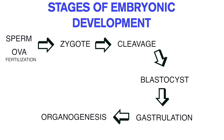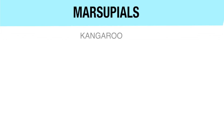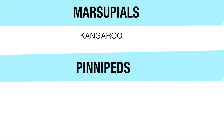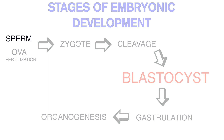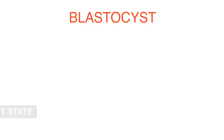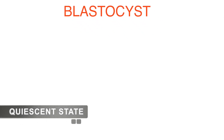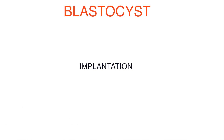This delayed implantation is a process seen in marsupials like kangaroos, and also in pinnipeds, commonly known as seals. In these mammals, every developmental stage is the same, but the exception is only the pause — the timing in stages. It's at the blastocyst stage where the blastocyst enters a quiescent state and does not attach itself to the uterine walls, so implantation does not occur.